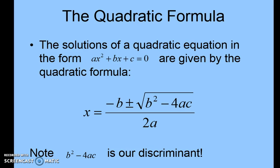The quadratic formula: the solutions of a quadratic equation in the form ax² + bx + c = 0 are given by x equals negative b plus or minus the square root of b squared minus 4ac, divided by 2a.